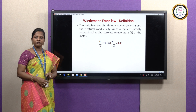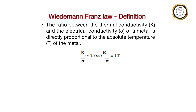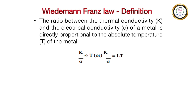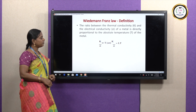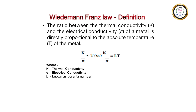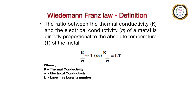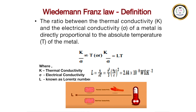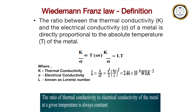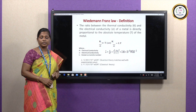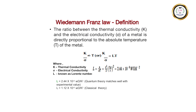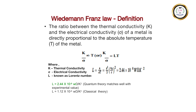The Wiedemann-Franz law states that the ratio between thermal conductivity K and electrical conductivity sigma is directly proportional to temperature, where the proportionality constant L is the Lorentz number. K is thermal conductivity, sigma is electrical conductivity, and L is the Lorentz number, where L equals K divided by sigma T. By using the quantum approach, we prove the experimental value of the Lorentz number as 2.44 × 10⁻⁸ Watt Ohm per Kelvin squared.